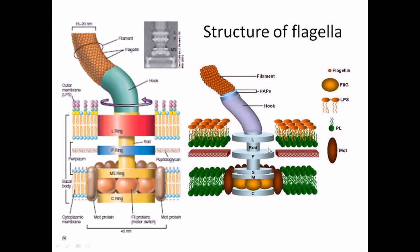That is the overall structure of the flagellum. In future videos, we will cover the assembly process of flagella and how flagella actually rotate. In this picture, we can see flagellin, FliG proteins, phospholipids (PL), and lipopolysaccharide (LPS) layers visible on the outside. Those are familiar terms. Thank you.